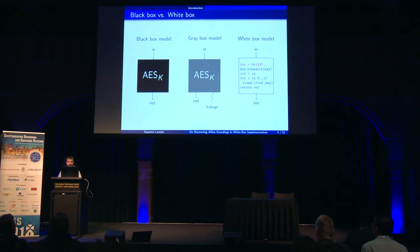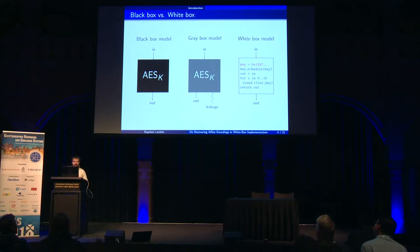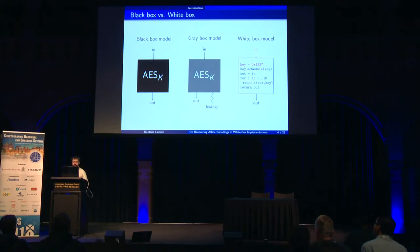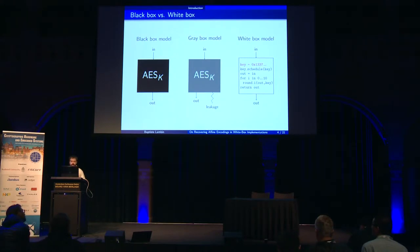So first, what is the model? Classically, when we study a block cipher, we are in the black box model. For example, you have this box which does some AES with a fixed key K, and the attacker wants to try to recover this key. He can only use inputs and outputs of the algorithm.